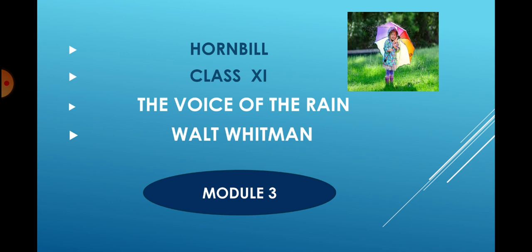Yes children, in module 2 we discussed the cyclic and transforming quality of the rain and in module 3 we will discuss the rest of the poem.